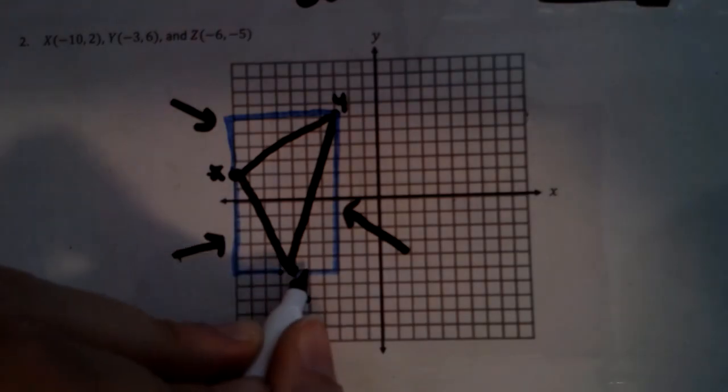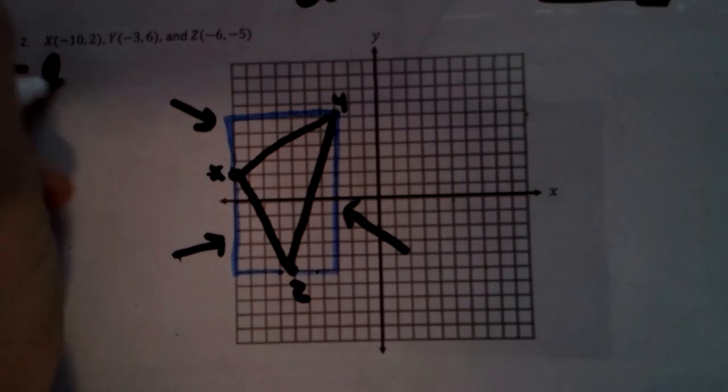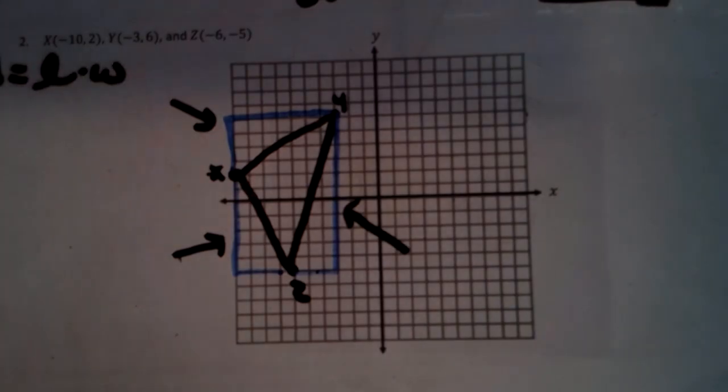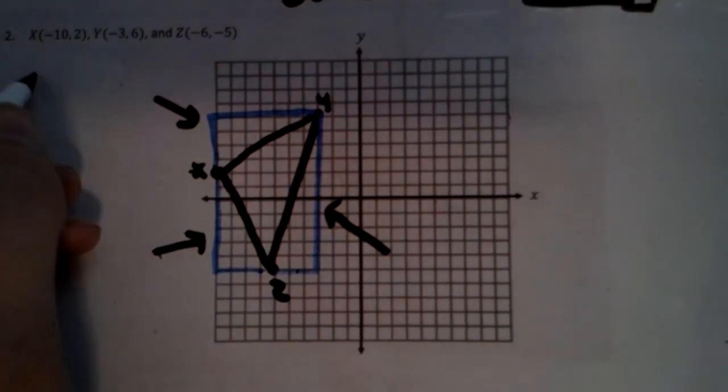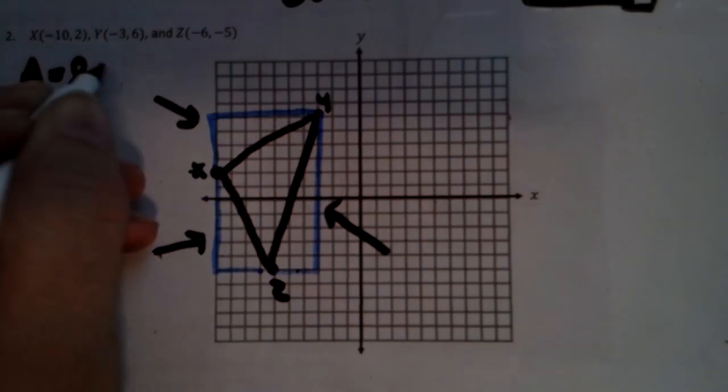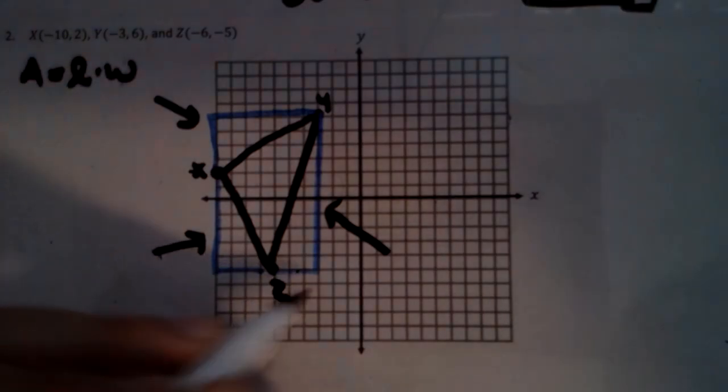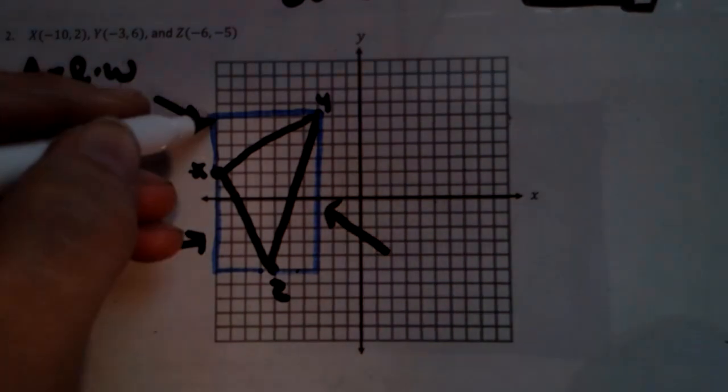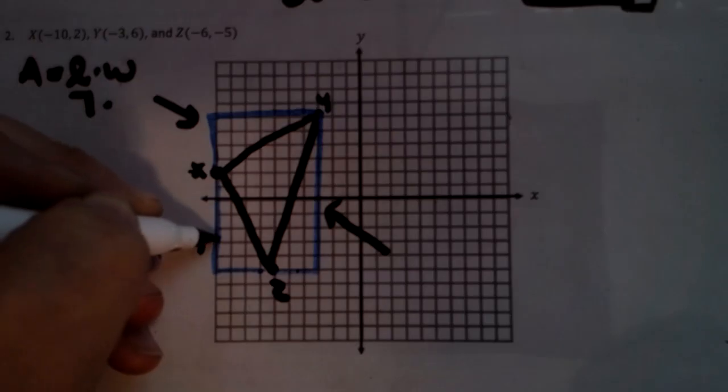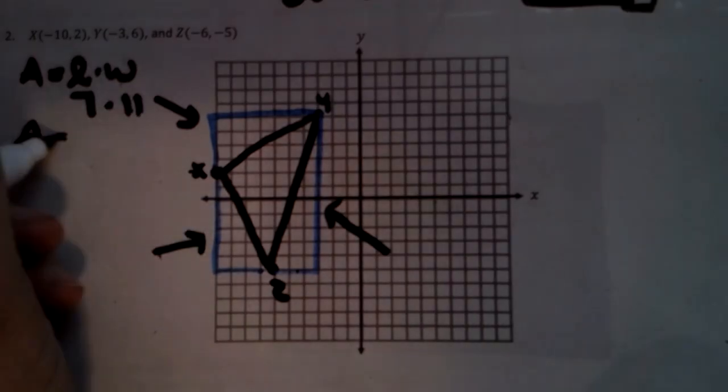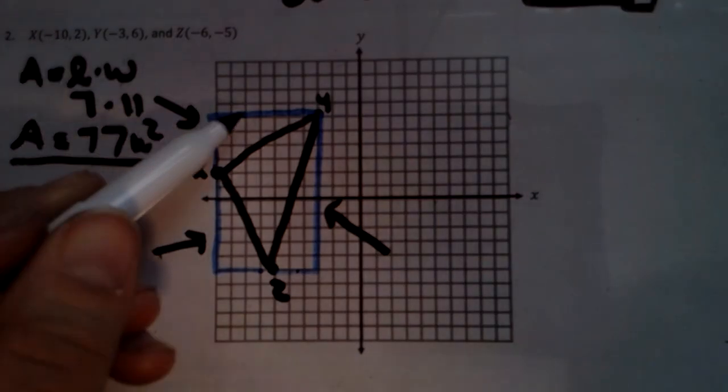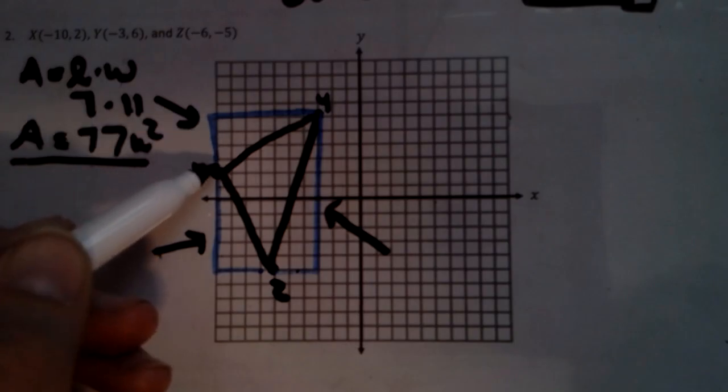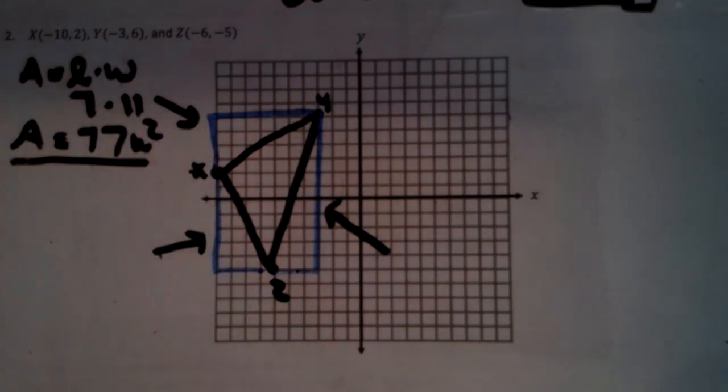So we have a one, two, three, four, five, six, seven across. So area equals length times width for this, is for the big rectangle. Okay. Let me move that over just so it's not on the doc cam. There we go. So we have a one, two, three, four, five, six, seven times one, two, three, four, five, six, seven, eight, nine, ten, eleven. Seventy-seven units squared is the full rectangle.